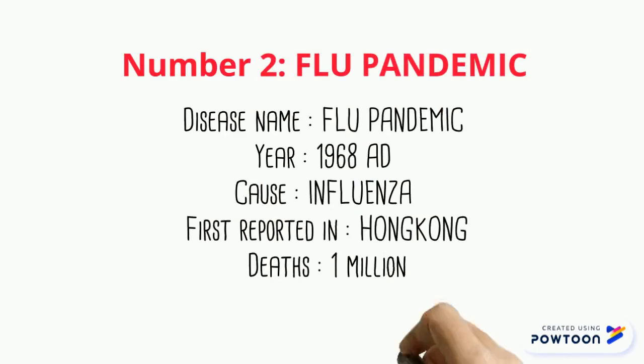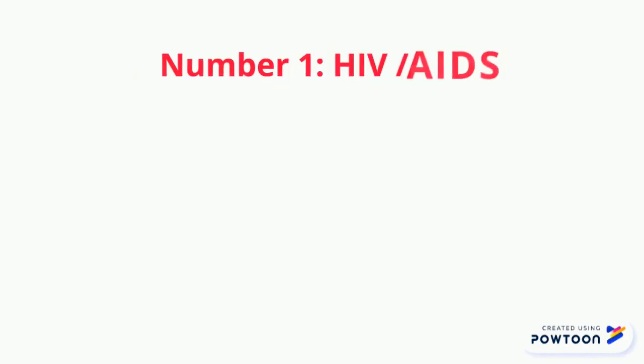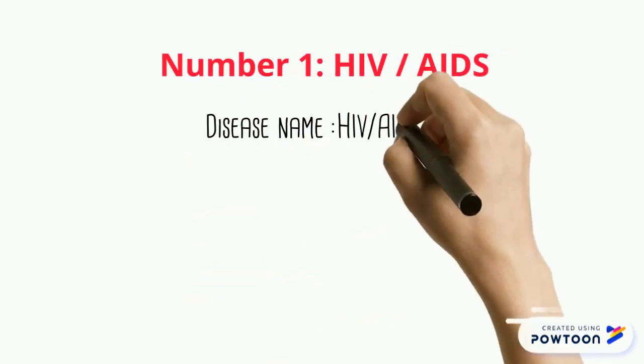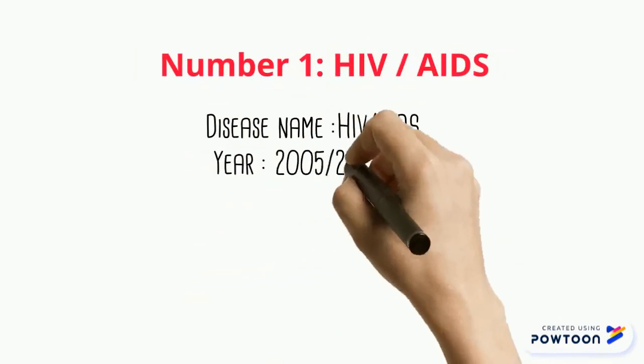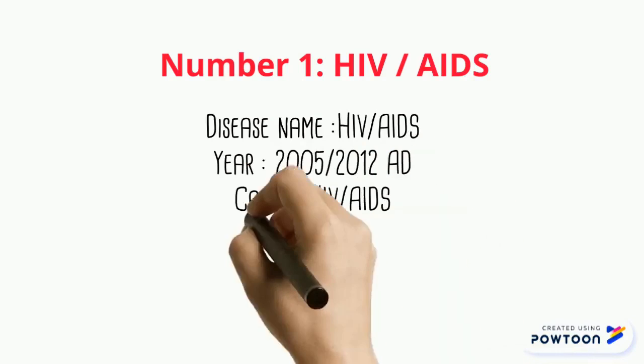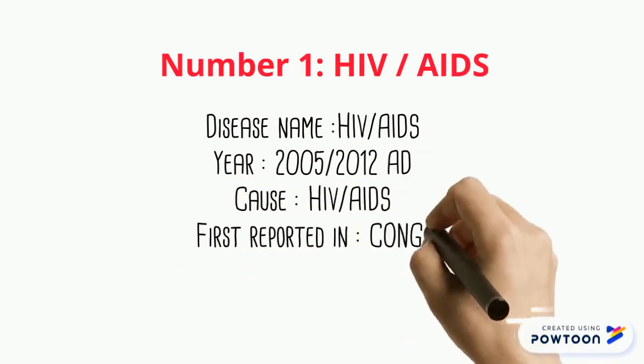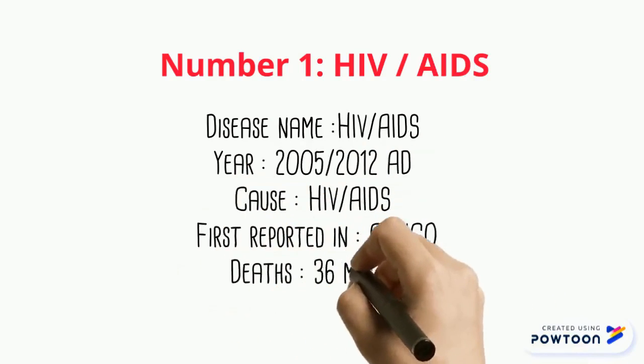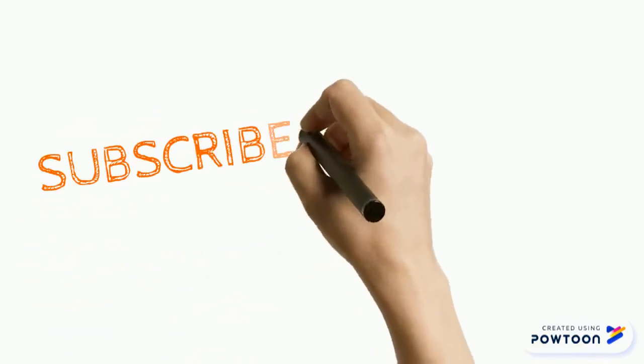Number 1 is HIV/AIDS. First identified in the Democratic Republic of the Congo in 1976, HIV/AIDS has been a global pandemic killing more than 36 million people since 1981. Between 2005 and 2012 was the peak period of its spread.